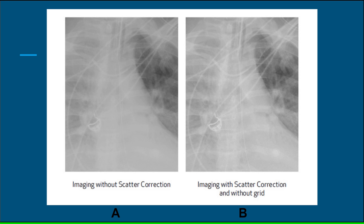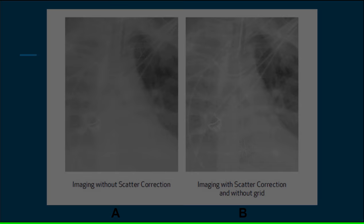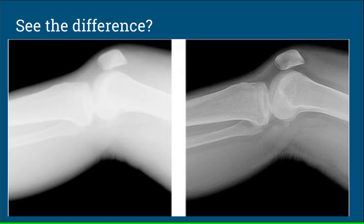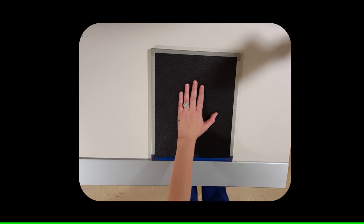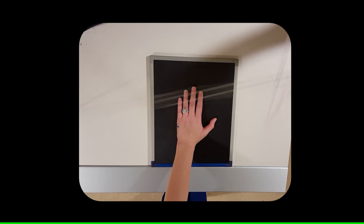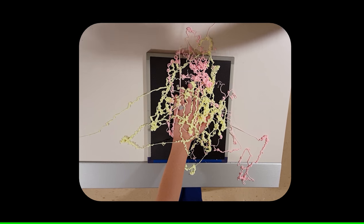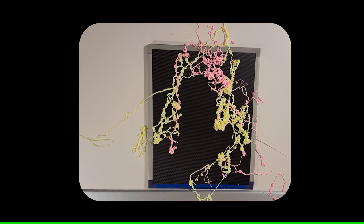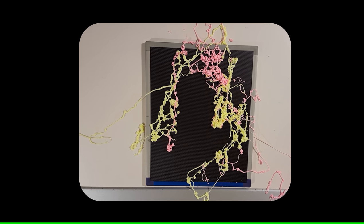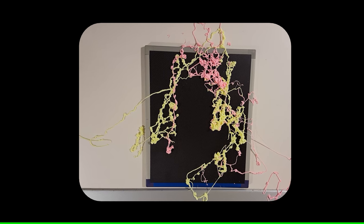Locating the carina on image A is a bit more difficult than with image B. Just one more example of how scatter affects the final image — see the difference? This demonstration shows how, with no collimation or beam-restricting devices, scatter reaches the IR and causes a reduction in image quality. When the hand is removed, you can see an obvious outline of scatter on the cassette. With proper collimation, x-ray photons would only hit the area of interest and nothing more.